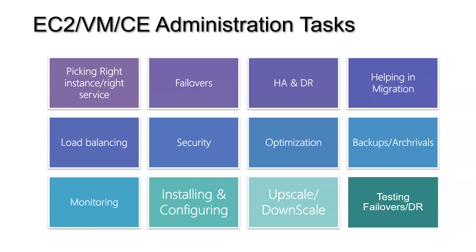The next administrative task is failovers — you need to create a failover mechanism so that if the primary database deployment fails, there is a fallback. You should also have a strategy for high availability and disaster recovery, recommending to the team how HA can be achieved using availability zones, availability sets, load balancing, or auto scaling. For cross-region resilience, you might use Azure Site Recovery or cross-region replicas.